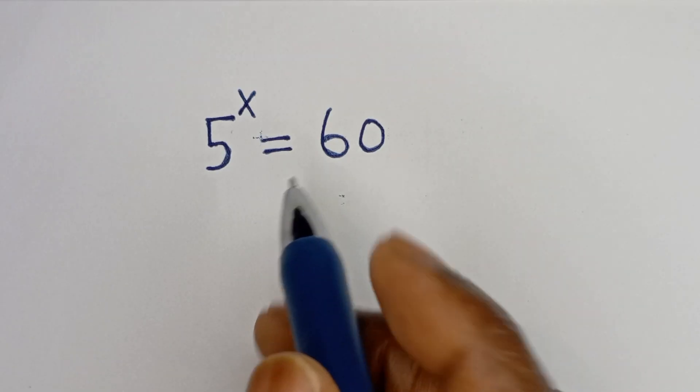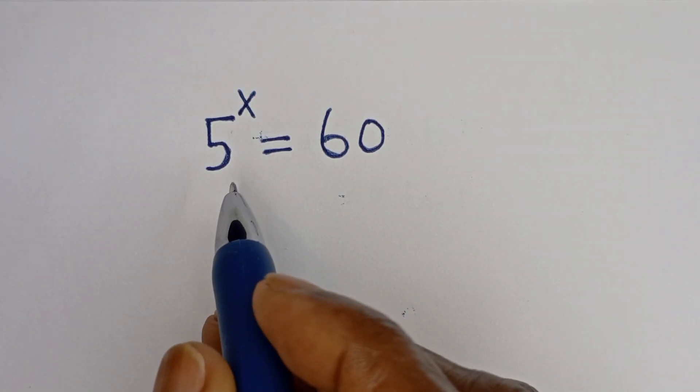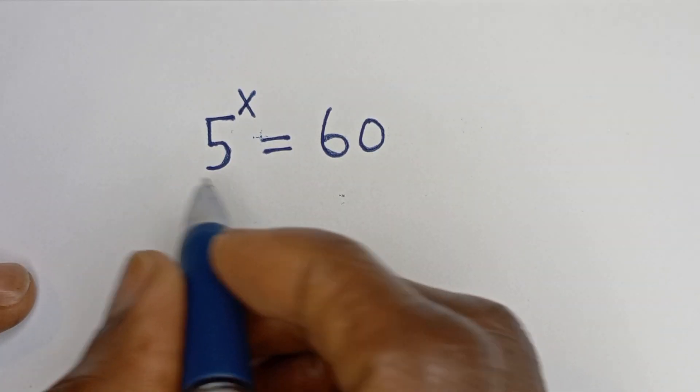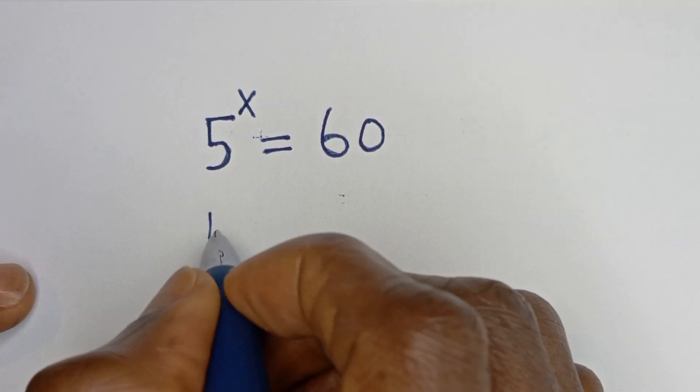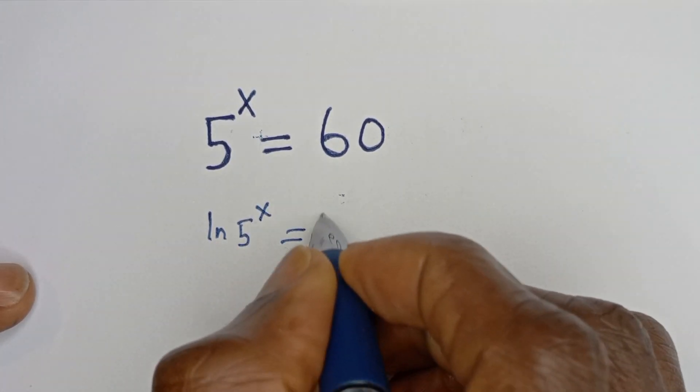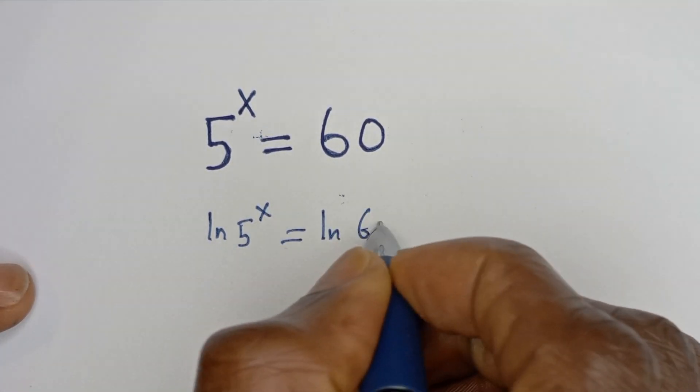Hello, how to solve for x in this equation 5 to the power of x is equal to 60. Then let's take the natural log of both sides. ln of 5 to the power of x is equal to ln of 60.